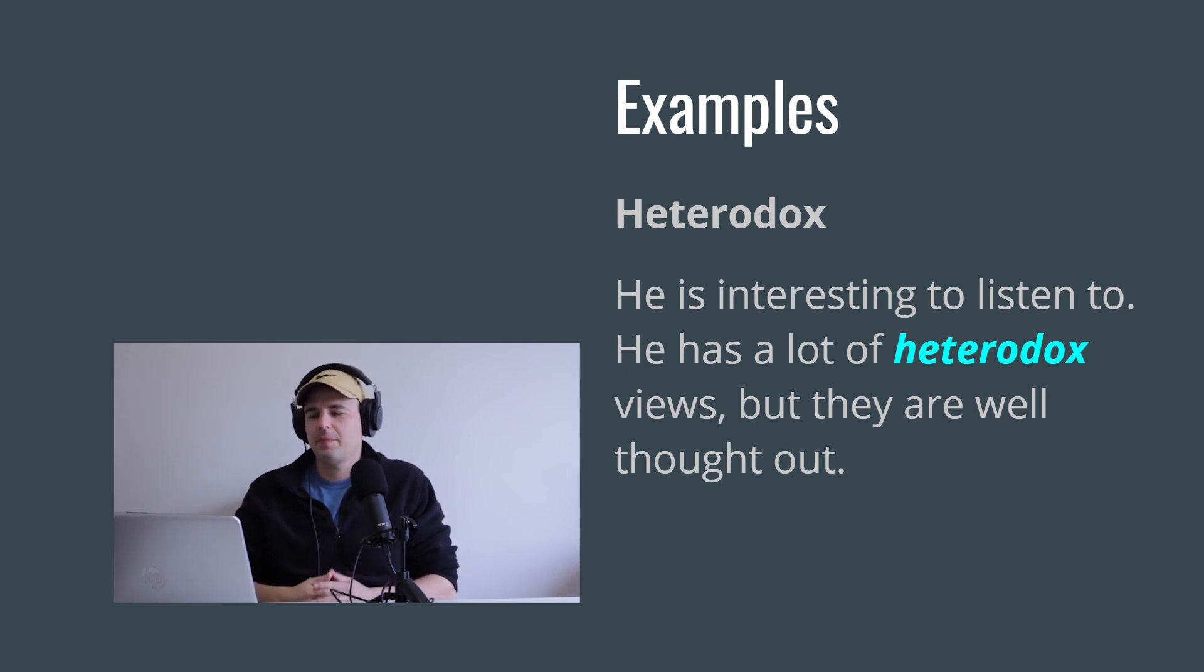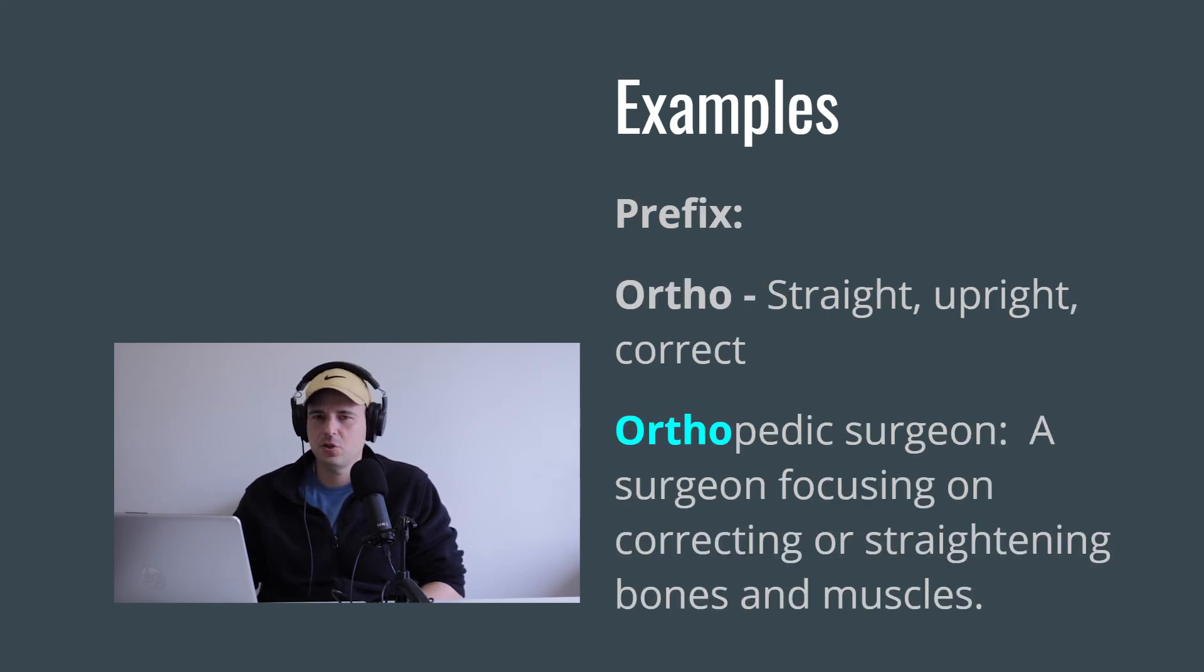So examples here with the start, you'll notice it starts with the prefix ortho, and that means straight, upright, or correct. So there's a type of surgery or one type of surgeon, a doctor who does surgery, is called an orthopedic surgeon, and this is focusing on correcting or straightening muscles and bones.